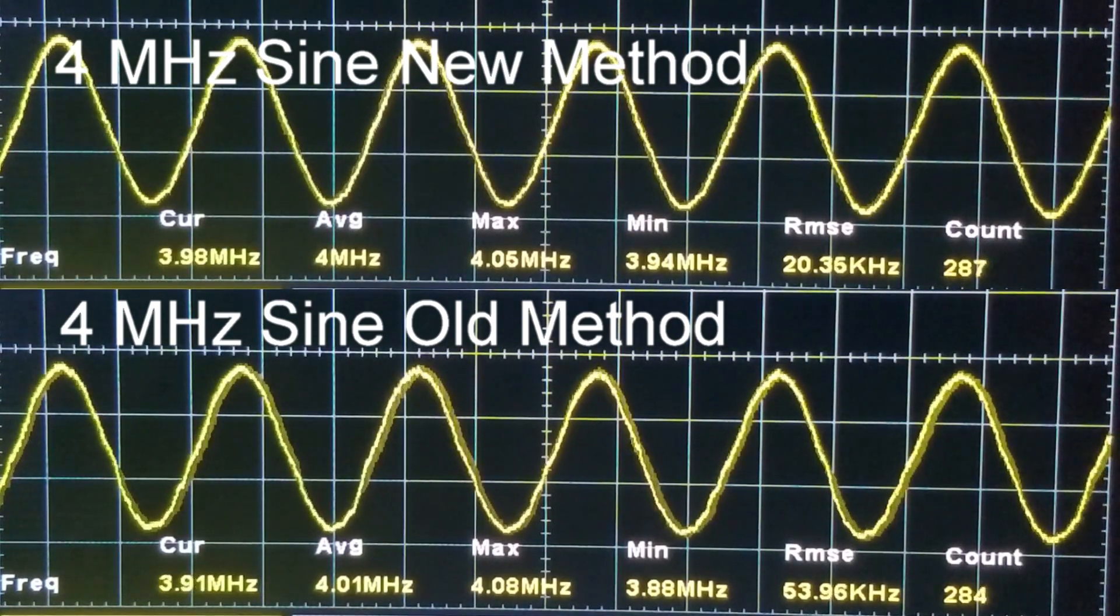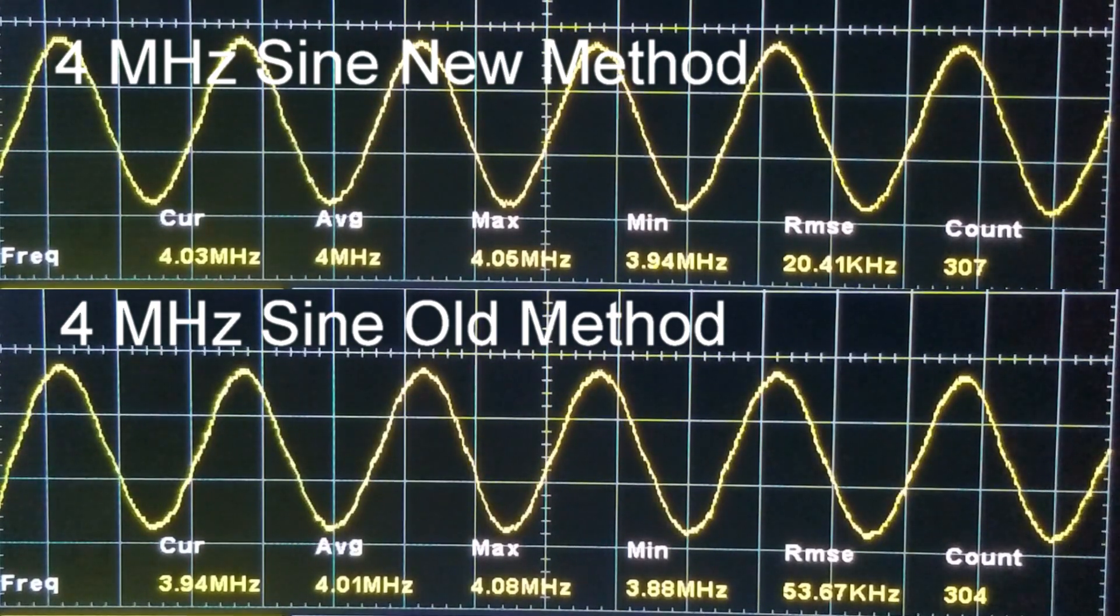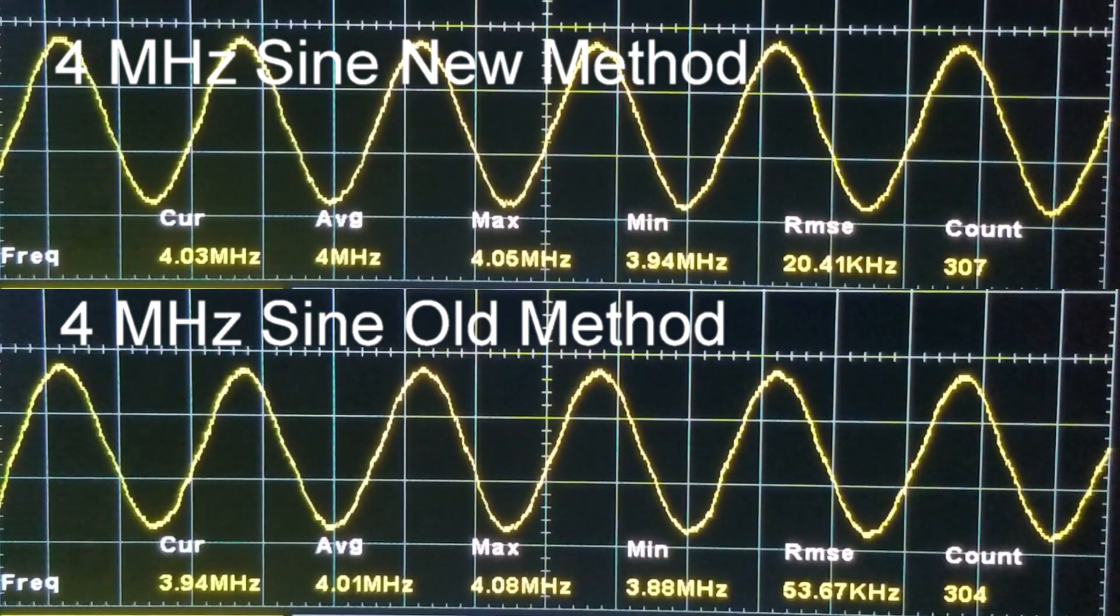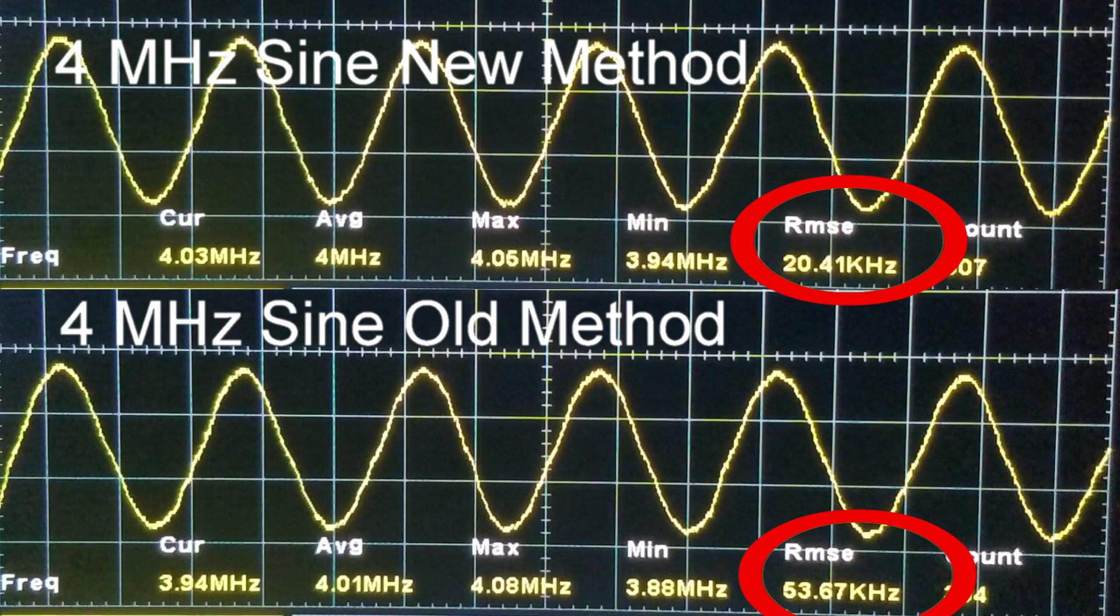Frequency RMS gives us a quantitative method for measuring the jitter. Here's a comparison between the old method and the new method for a 4 megahertz sine wave. We can see that the jitter is significantly lower with the new method.